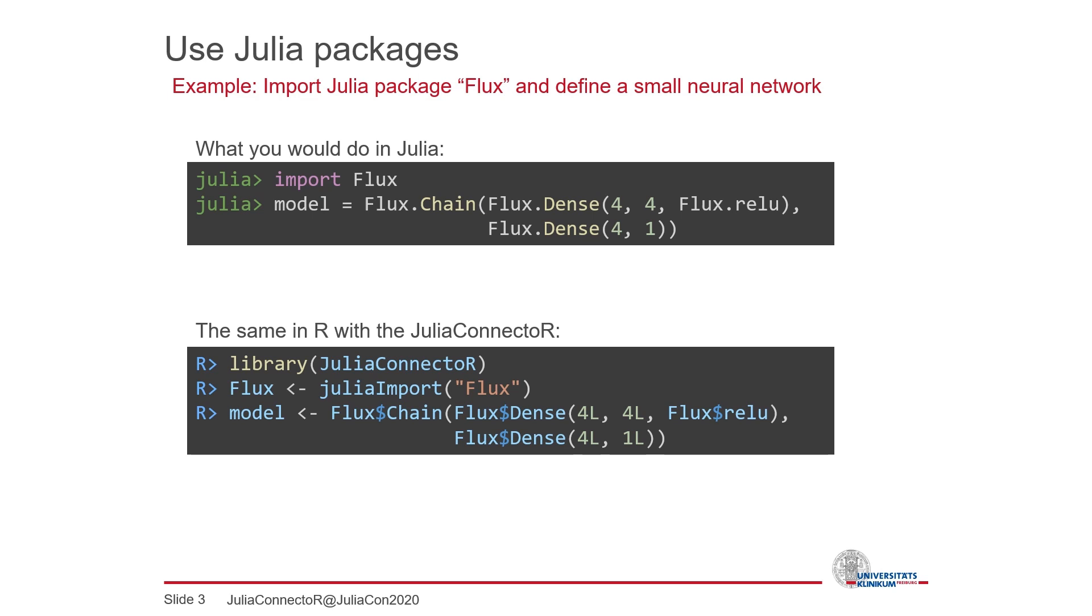If you would like to do the same in R, you can use the JuliaConnector. The JuliaConnector does not know about Flux but the Julia import function simply scans a specified Julia package. Everything that can act as a function in this package is translated to an R function and collected in an R environment. With this you can call the dense and chain function now in R and also pass the activation function as an argument.